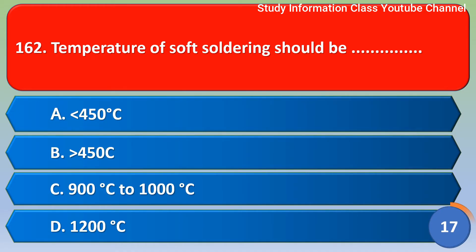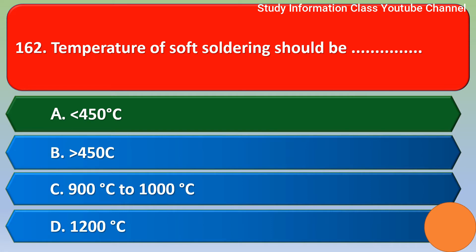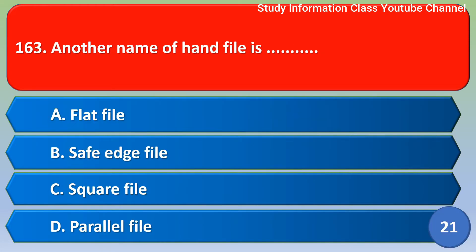Next question: the temperature of soft soldering should be — Option A: less than 450 degrees Celsius. Option B: greater than 450 degrees Celsius. Option C: 90 to 2000 degrees Celsius. Option D: 1200 degrees Celsius. The correct answer is Option A — less than 450 degrees Celsius.